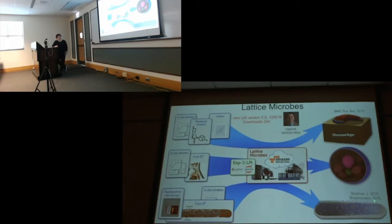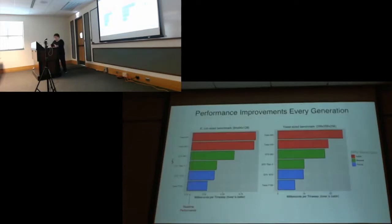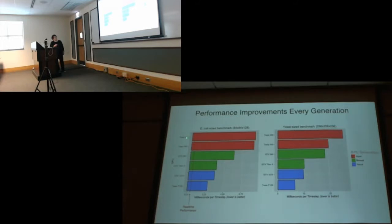We've also done yeast and large colonies of cells. Just to give a feel for performance — sometimes we're lucky because they keep giving us better and better GPUs. What you see here is the GPU type versus the time in milliseconds per time step. If you want to do an hour simulation, you can calculate how many time steps you'll have. For real-time performance — an hour on the computer for an hour of bacteria — you'd have to be way over here. We're far from that, but it keeps getting better and better.